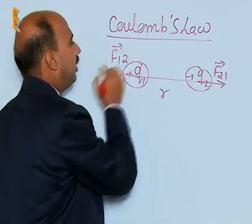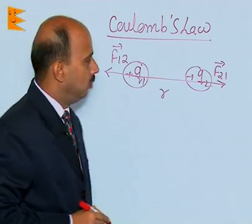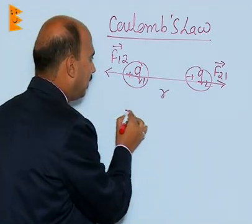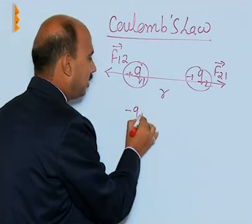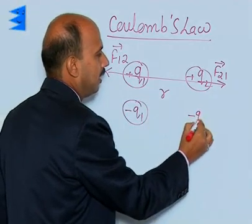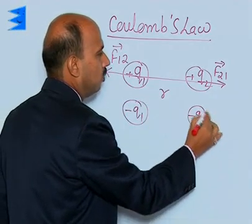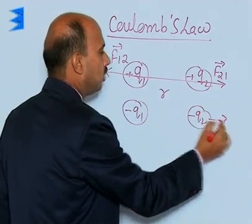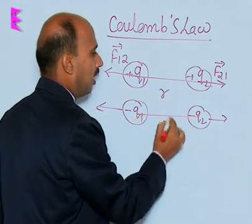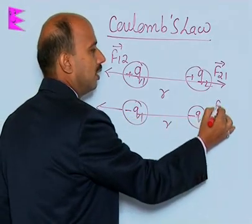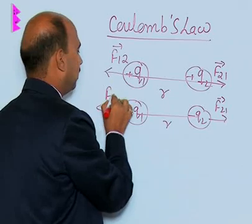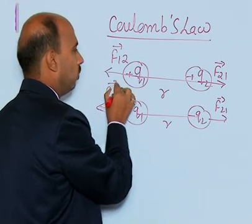That is also a repulsive force. If you take a negative charge Q1 and a negative charge Q2, both are again separated by the same distance R. Here again there is repulsive force F21 and there is F12.